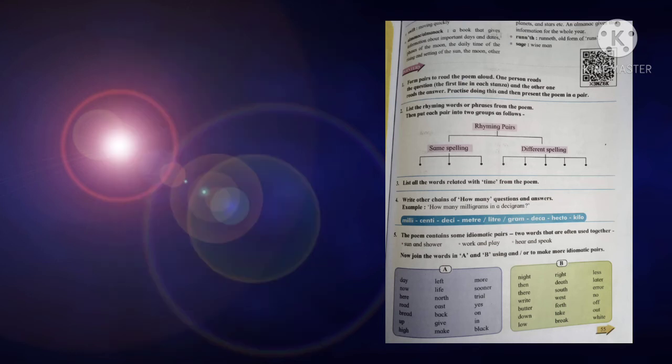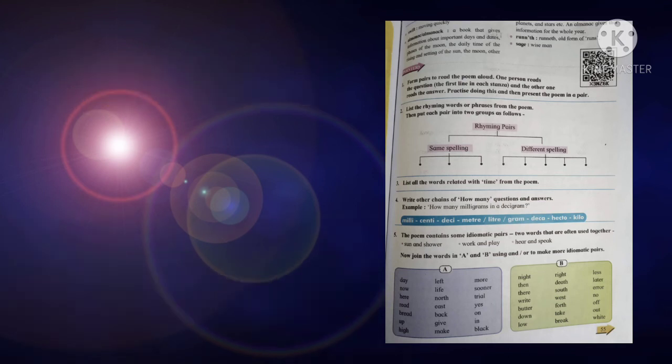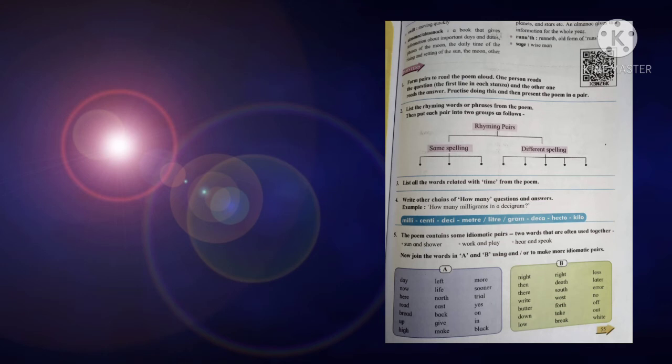So did you understand? First question means you have to only read it. Now question number two: list the rhyming words or phrases from the poem, then put each pair into two groups as follows.